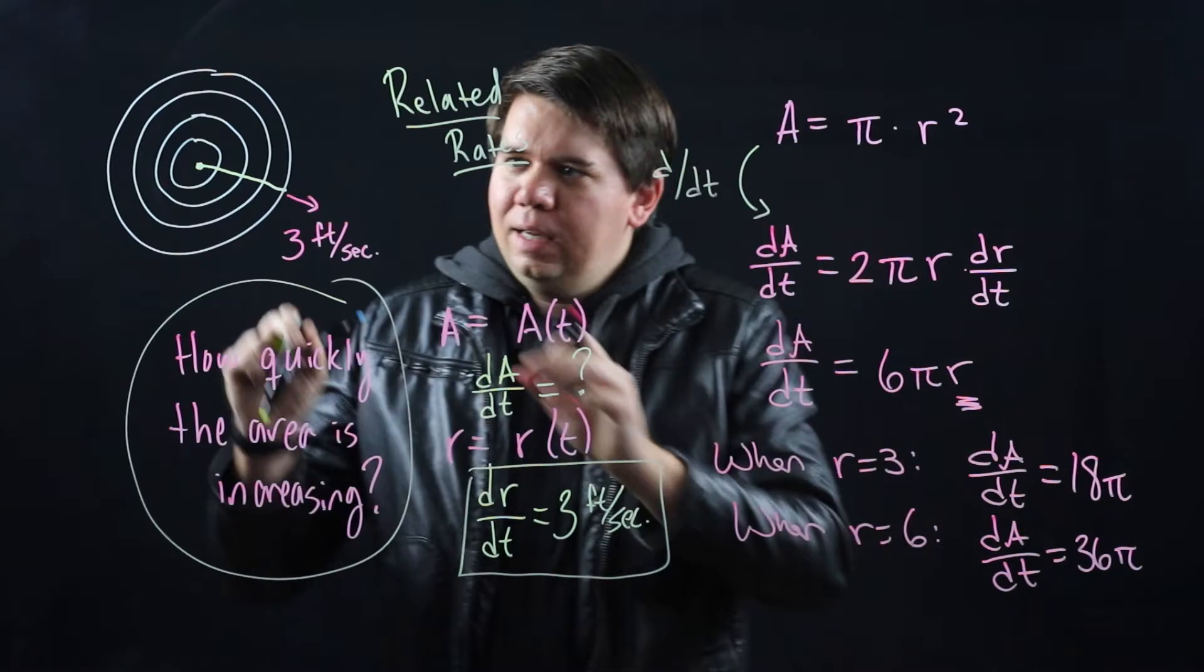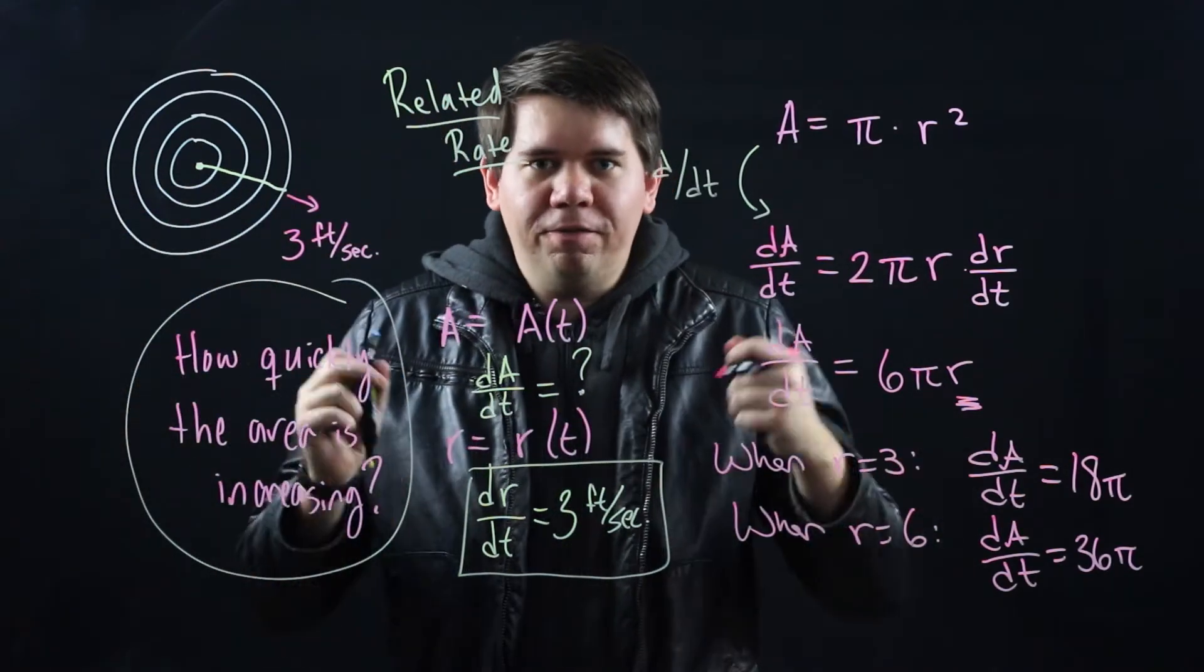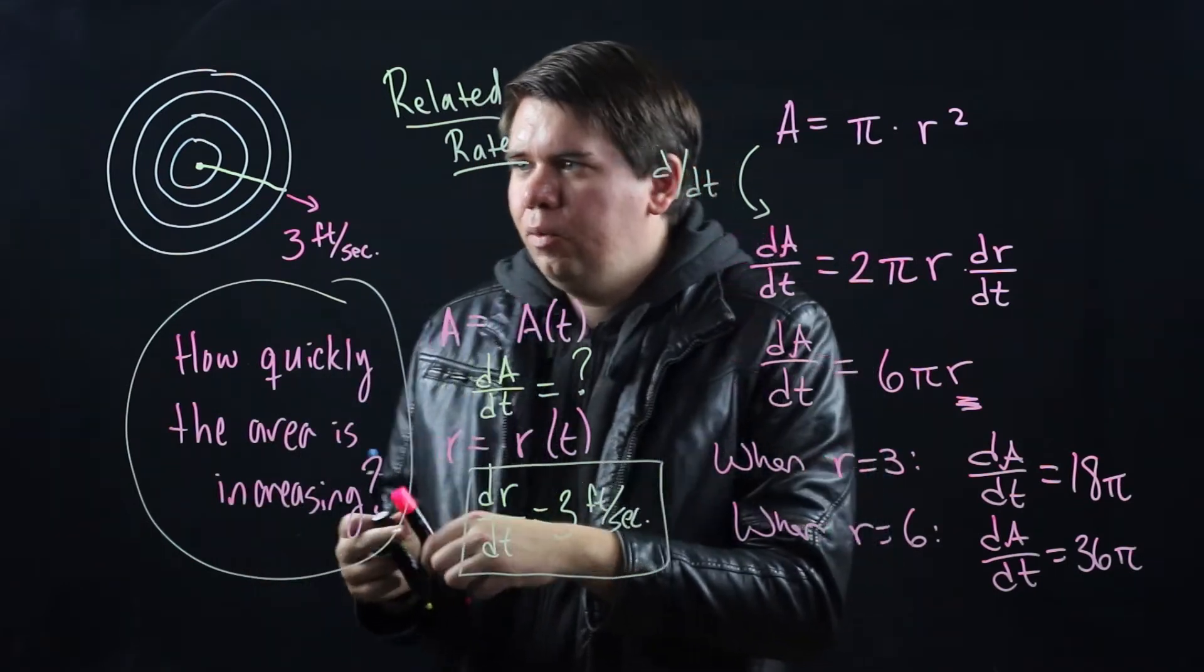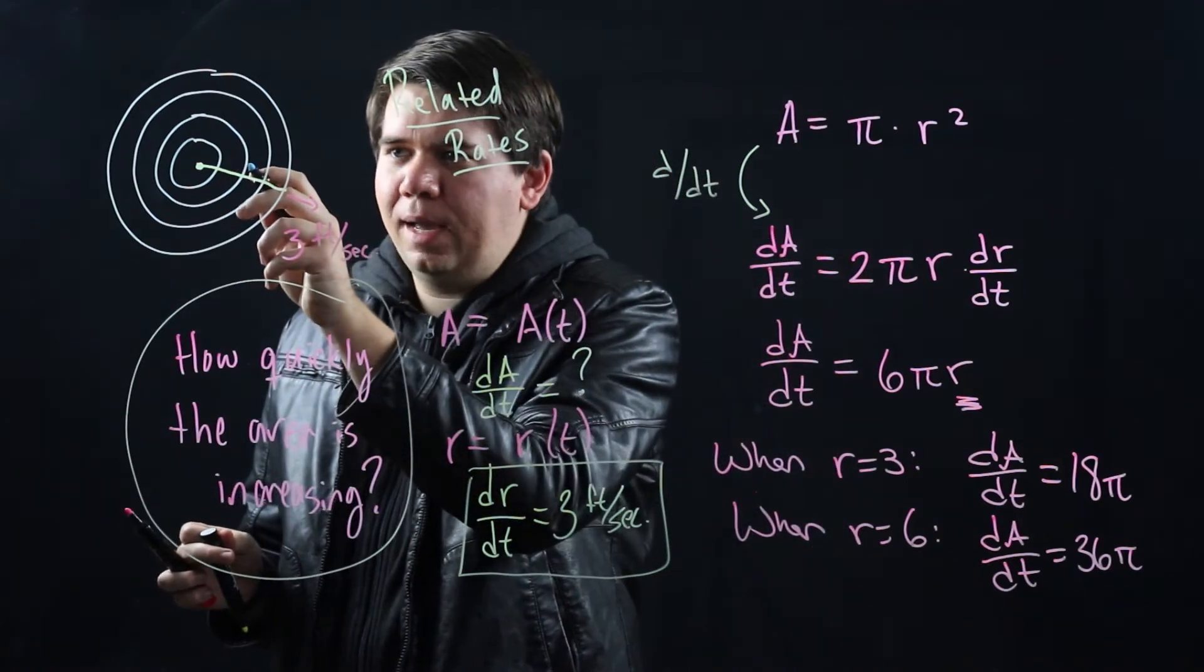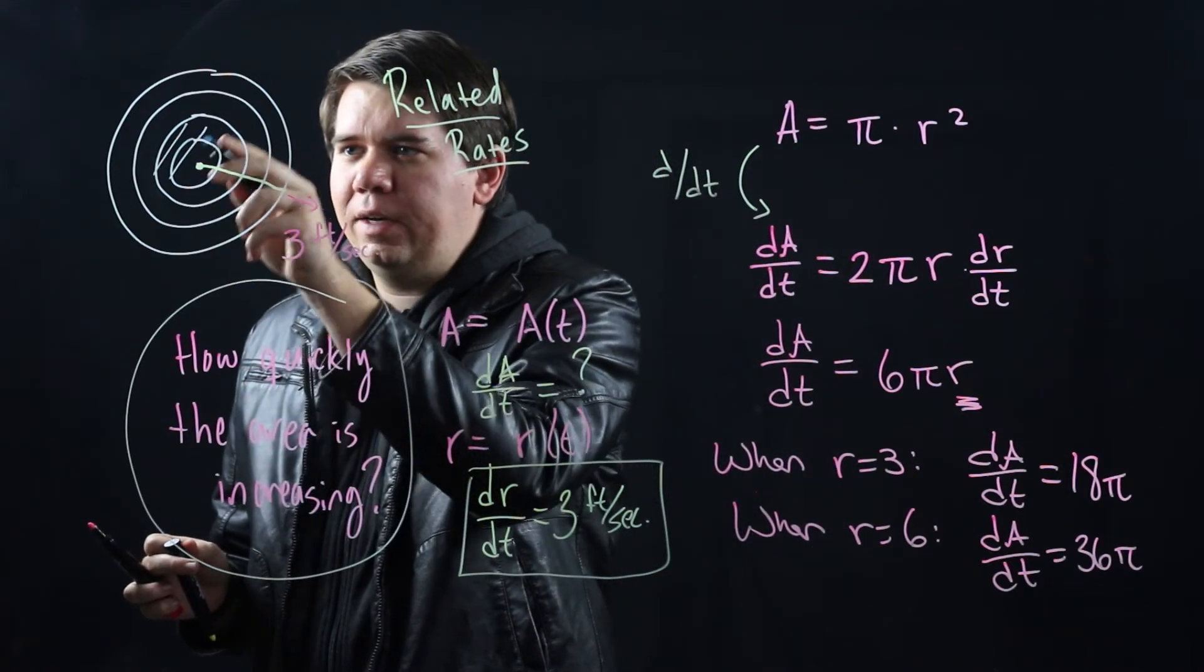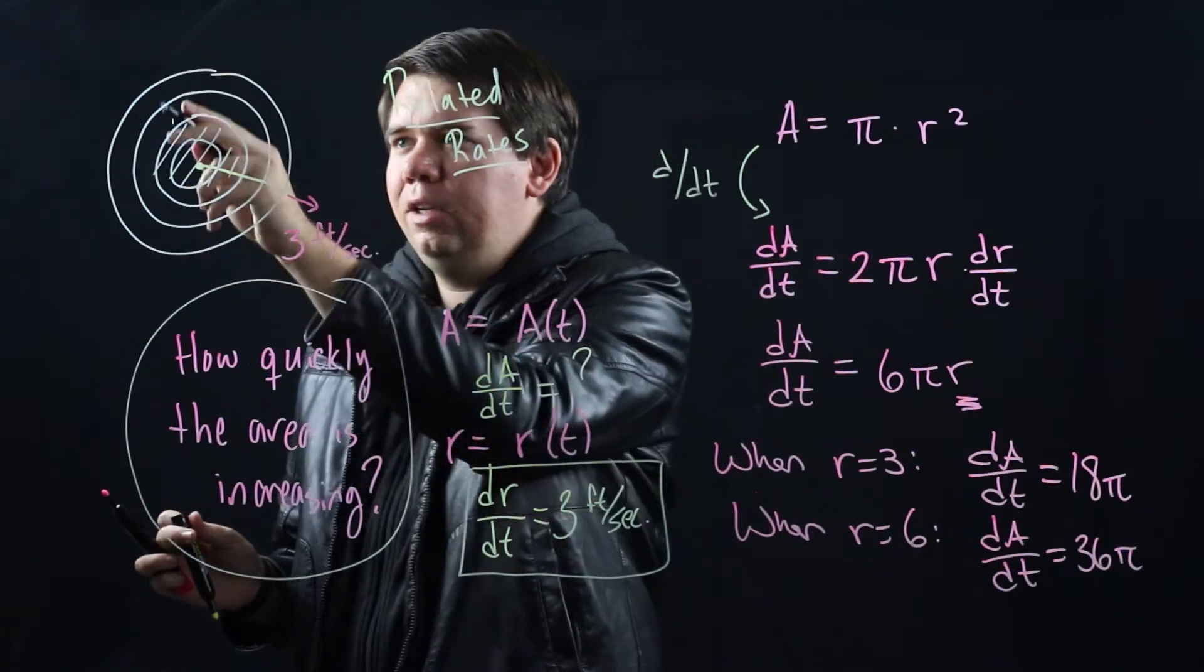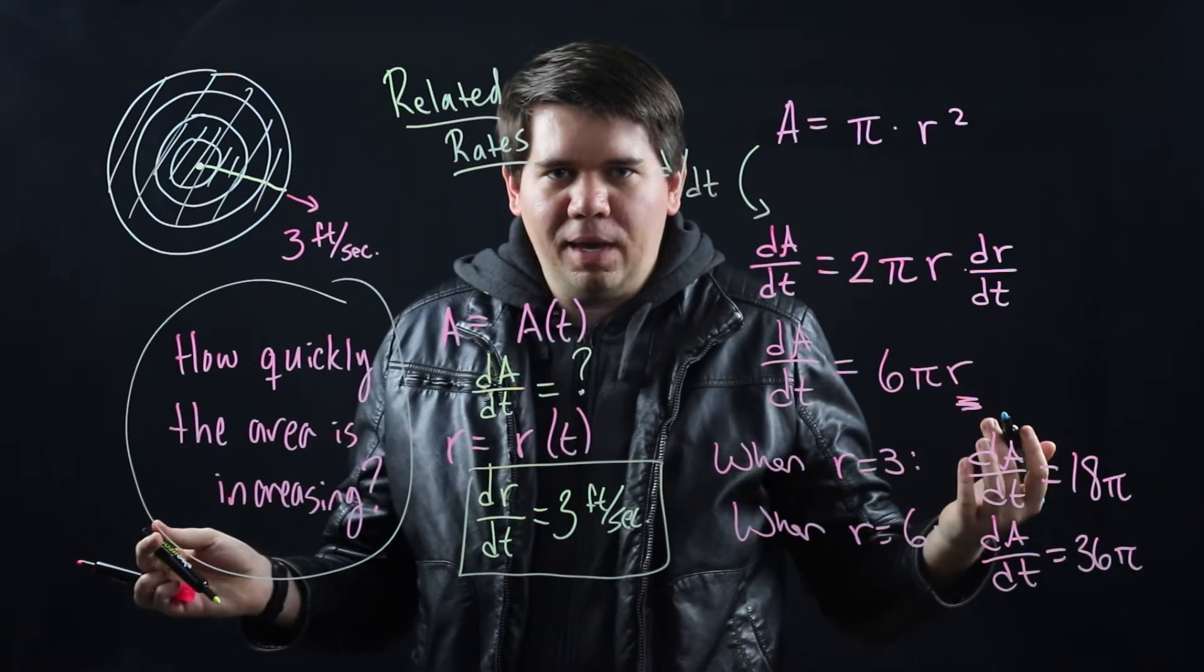What this is saying is if you keep expanding the radius at constant rate, the area will be growing faster and faster and faster. This should make intuitive sense. When you just have a small circle and you increase it by some amount, you can think about how much area has been added to that circle. Compared to when you have a larger circle and you increase it by the same amount, you can think a larger contribution of area was made.